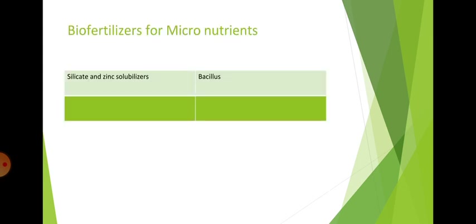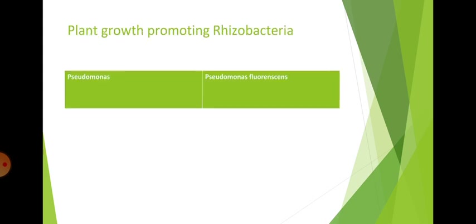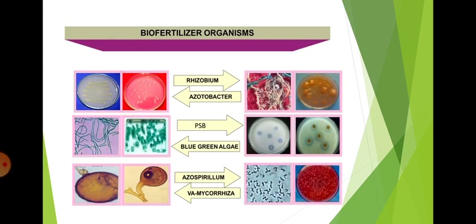Biofertilizers for micronutrients include silicate and zinc solubilizers such as Bacillus. In plant growth promoting rhizobacteria, Pseudomonas fluorescens is a key organism. Biofertilizer organisms include Rhizobium, Azotobacter, PSB, Blue Green Algae, Azospirillum, and Mycorrhiza, as shown in this figure.